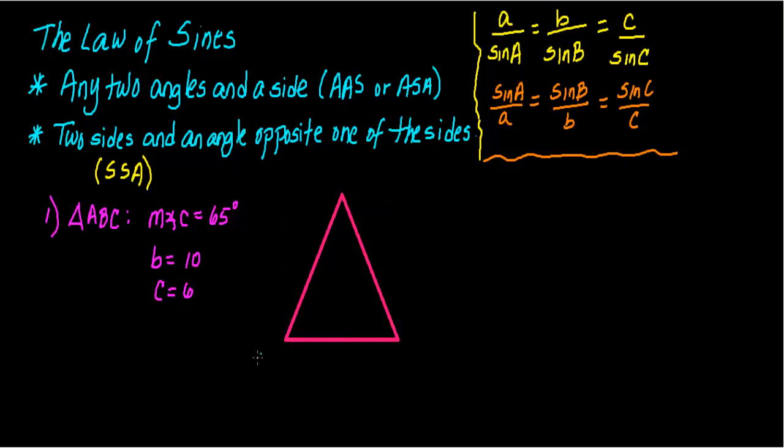For this triangle, I'm going to label ABC. And let's label what we have. The measure of angle C, that's 65. And we have side B equals 10 and side C equals 6. And that's all we have.